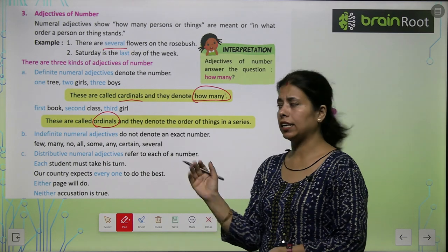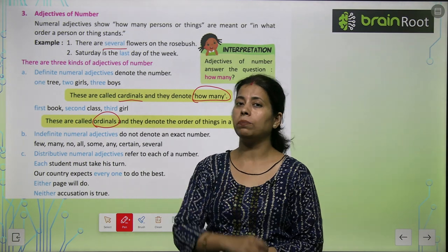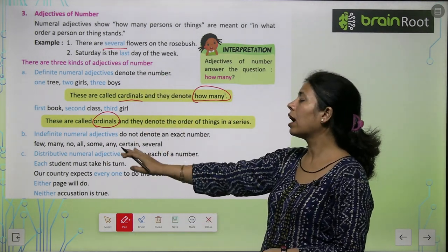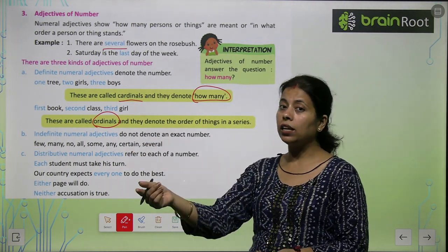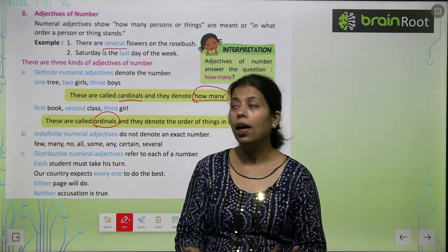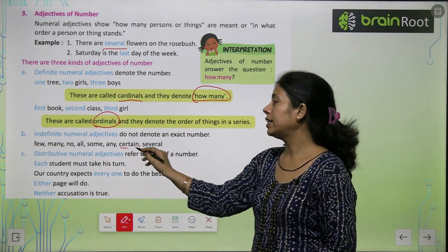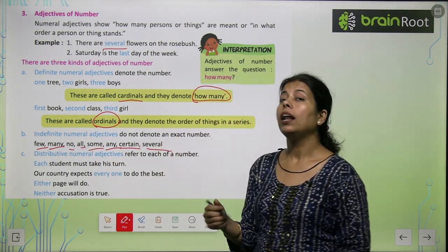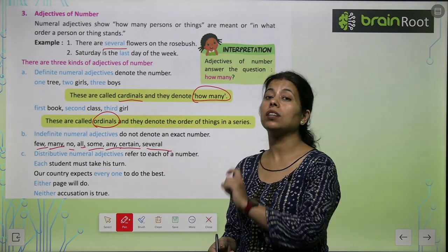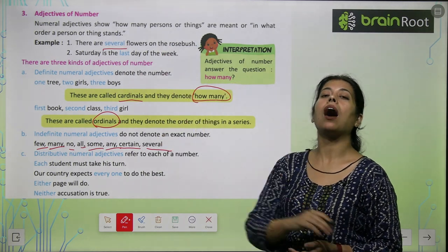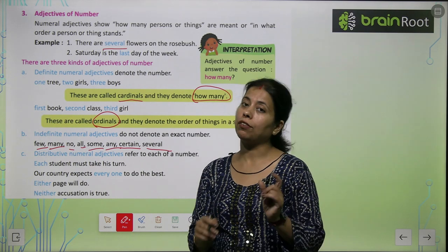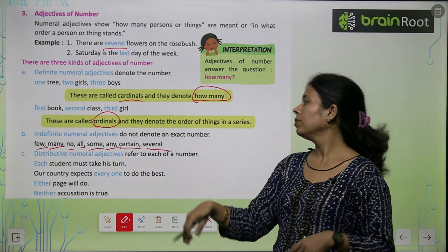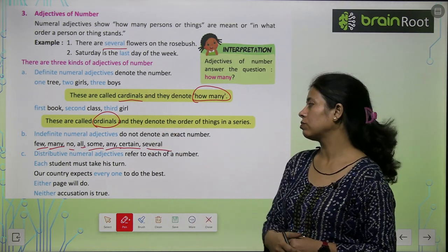How many things are in a series? Adjective of number के kinds में पहला है definite — उसके बाद indefinite। अगर पता है तो one, two, three — but नहीं पता तो some, all, enough, little, indefinite, certain, several, any, many, few, no, and all। इनमें से कुछ न कुछ adjective हम use करेंगे, क्योंकि number में नहीं पता। Adjective of number में पहला है definite — ordinal और cardinal — और दूसरा है indefinite।